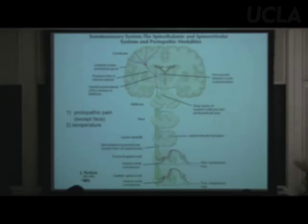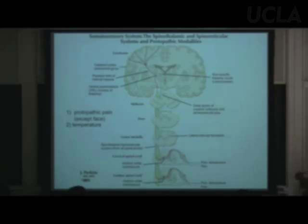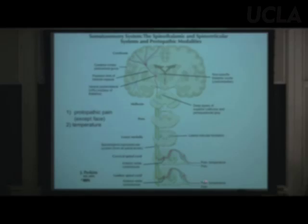In some places this system converges with the dorsal column system; in others it parts company. Axons from the periphery in this system tend to be small and poorly myelinated — so they're relatively slow. Their cell bodies are in the dorsal root ganglion, and they synapse immediately upon entering the spinal cord.